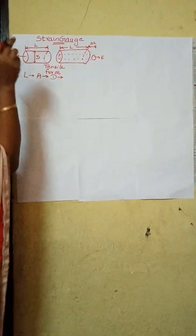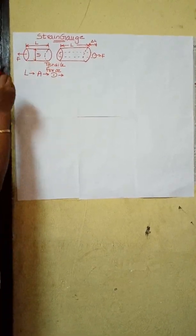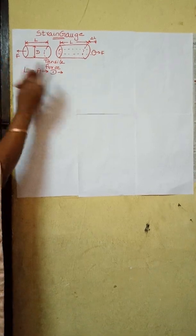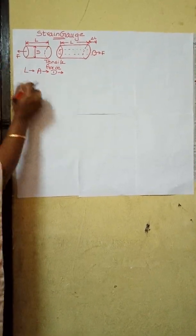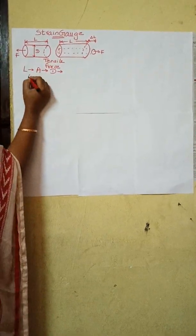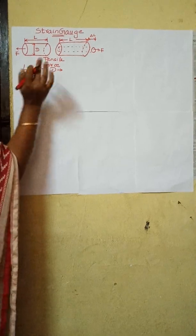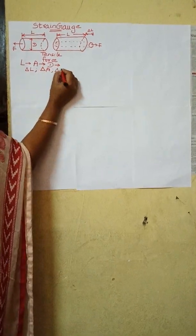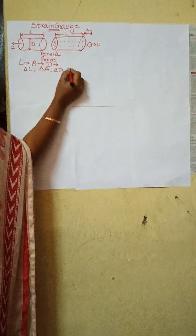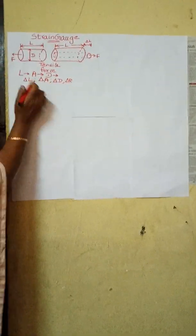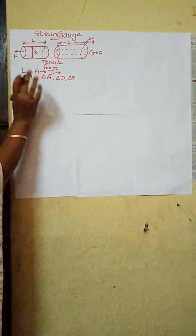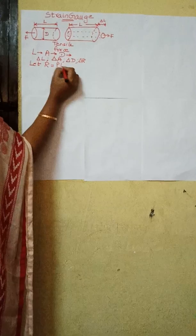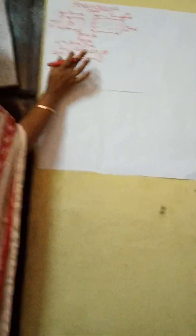Thus when the wire is strained, the dimensions also change. Let ΔL be the change in length, ΔA be the change in area, ΔD be the change in diameter, and ΔR be the change in resistance. The resistance of the unstrained gauge is given by the expression: R = ρL/A. Let this be your first equation.